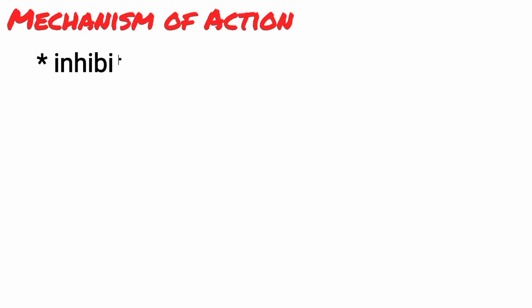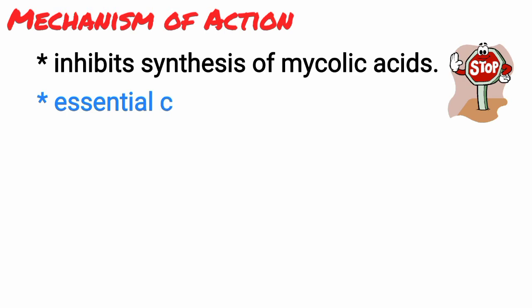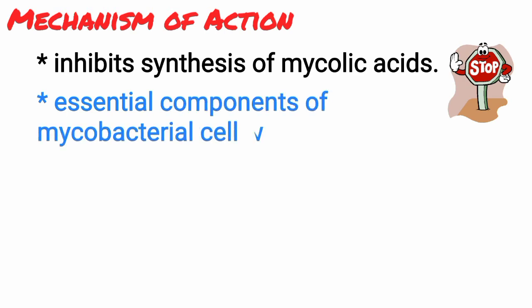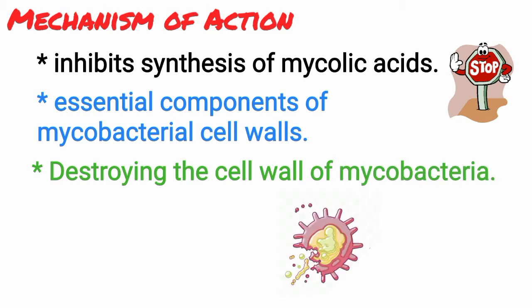Talking about the mechanism of action: isoniazid inhibits synthesis of mycolic acids, which are essential components of mycobacterial cell walls, thereby destroying the cell wall of mycobacteria.